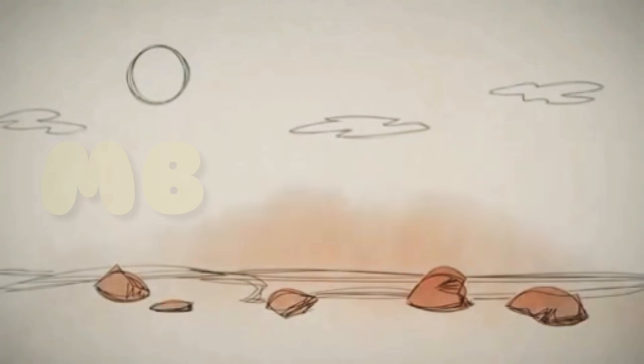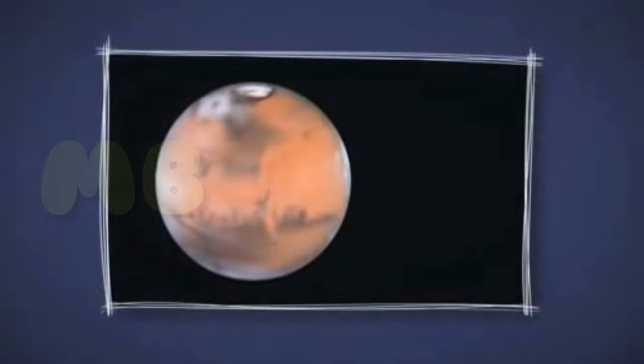When rusty dust from those rocks gets kicked up in the atmosphere, it makes the Martian sky look pink. From a long way away, the whole planet looks kind of reddish.